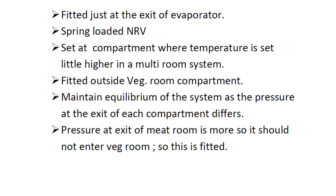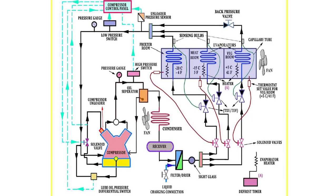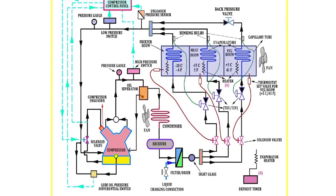The basic function is to ensure that refrigerant does not enter from the meat room into the veg room. It is a spring-loaded valve located at the exit of the evaporator of the compartment that is at a higher temperature — the veg room — fitted to maintain the equilibrium because pressure at the exit of the meat room is higher and should not enter the veg room.